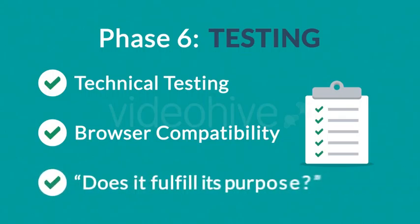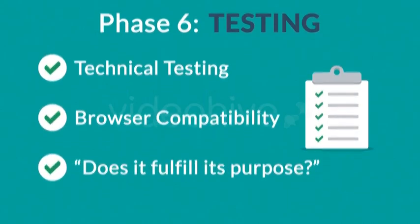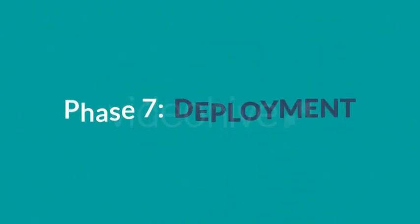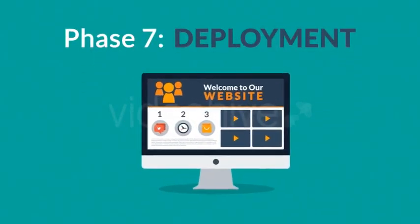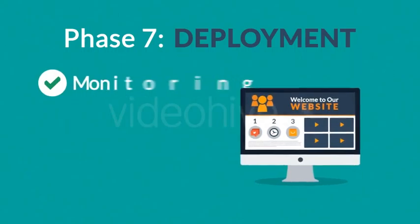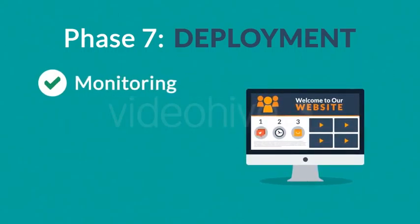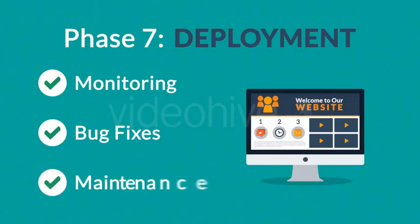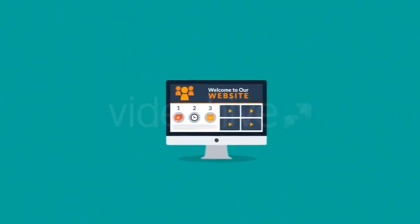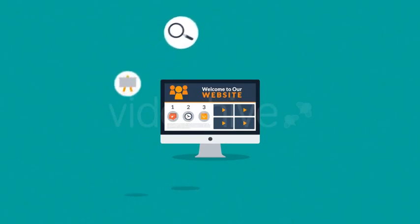Phase six: Testing. We test all the technical features like code and scripts, compatibility with major browsers, and we also ask ourselves if the website really fulfills its purpose. Phase seven: Deployment. After we launch the site, our job is definitely not done yet. We always monitor what's happening after the start, enabling us to fix any possible deficiencies.